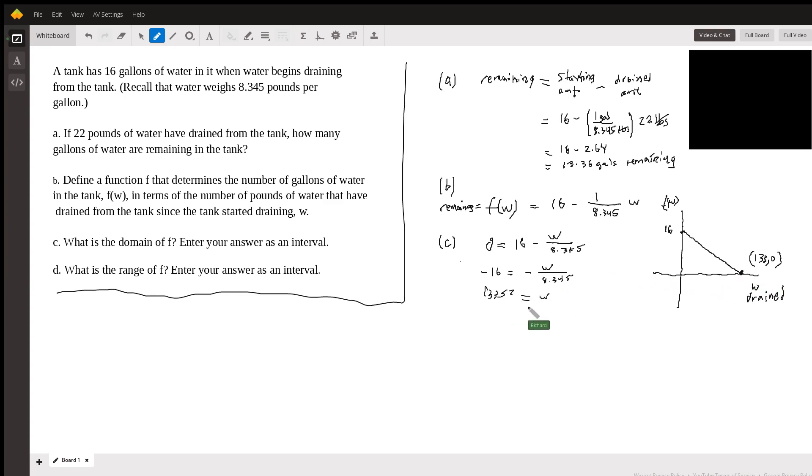So our domain here is going to be from zero to 133.57, and that would be inclusive on both sides. And the range, you can see the range is zero to 16. Eventually the tank will not have any water remaining. And so that's it. It's just a straight line graph.